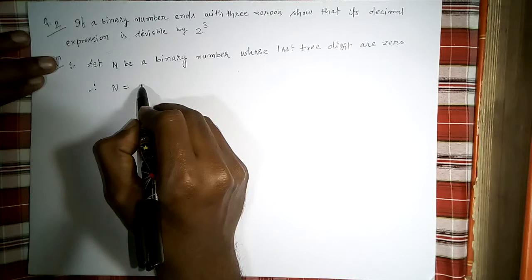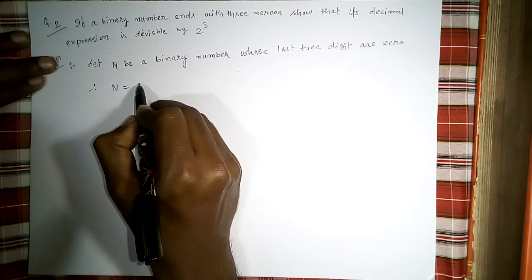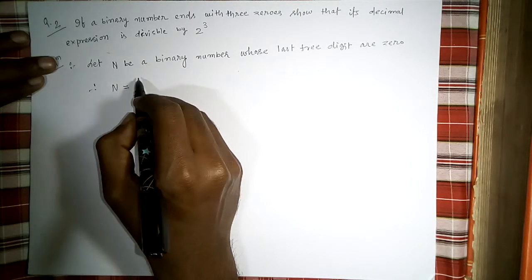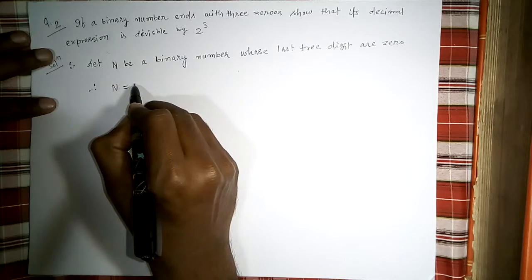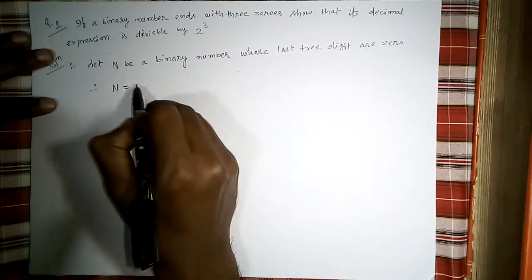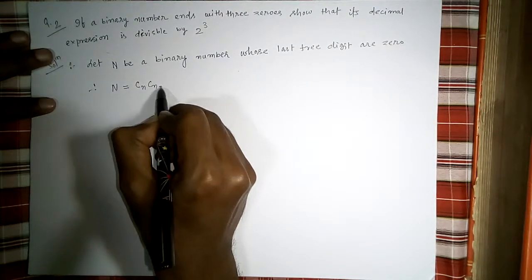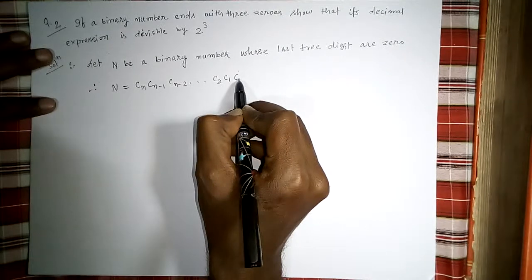n is a binary number whose last three digits are zeros. We can write its decimal expression as: c_n, c_(n-1), c_(n-2), ..., c_2, c_1, c_0.